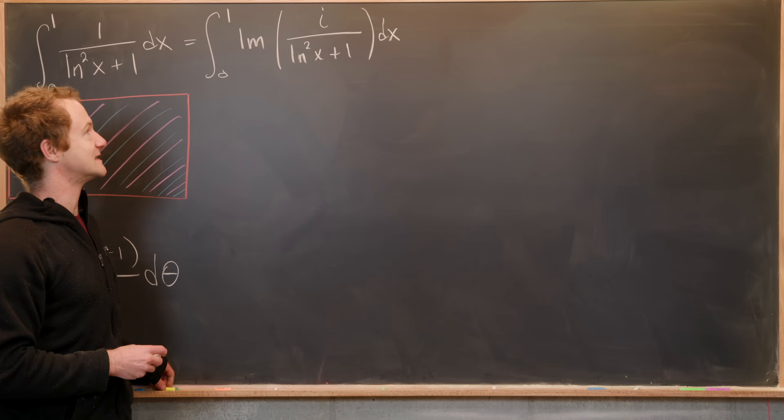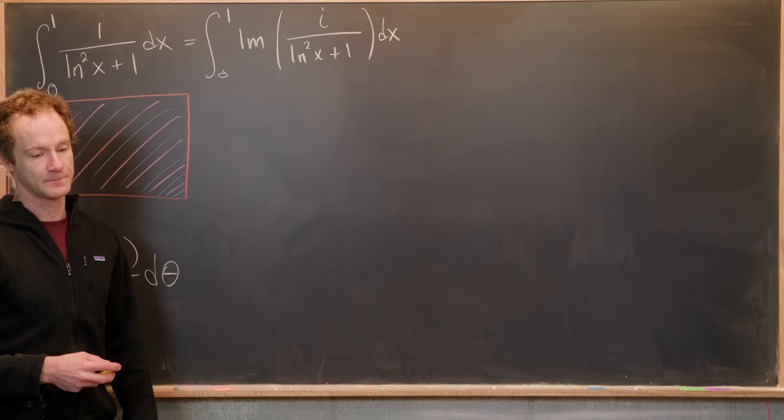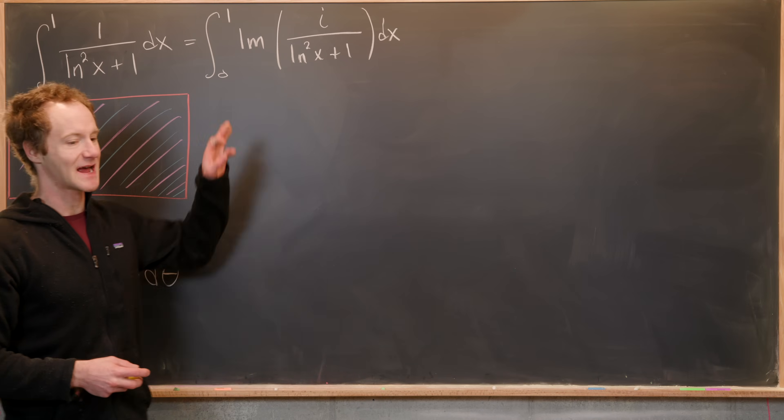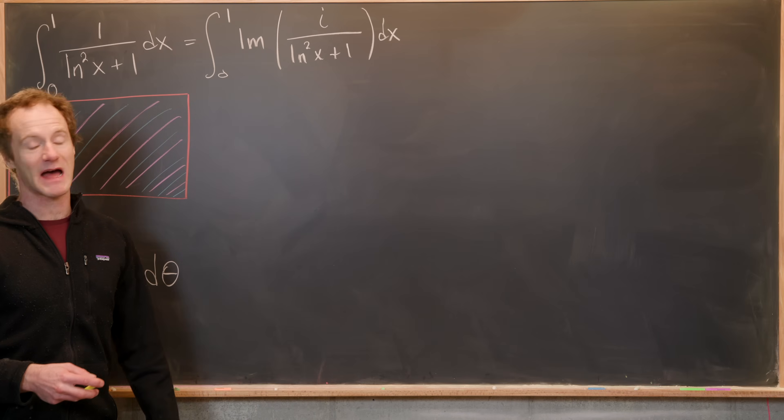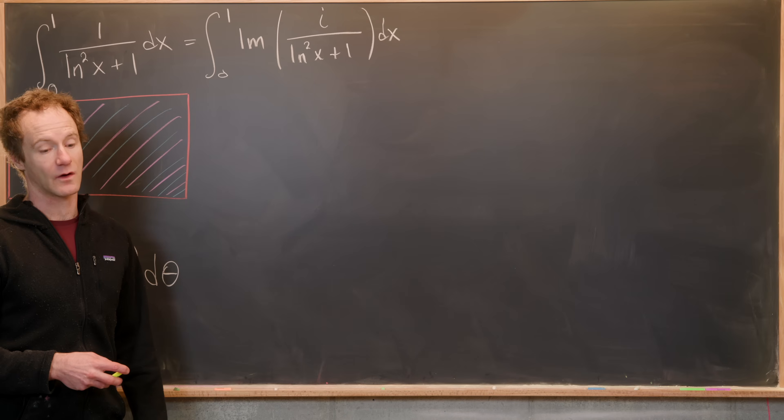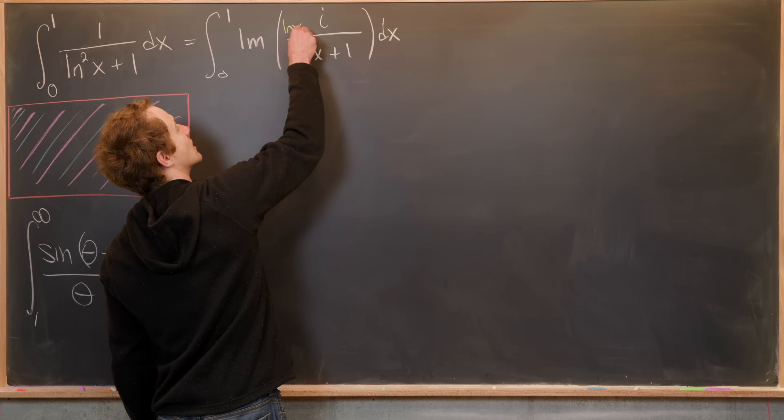Next, I'll add something that is real to the numerator in order to simplify this denominator. Notice, I can add something real to the numerator. And since I'm taking the imaginary part, that means I really haven't added anything to the whole thing.